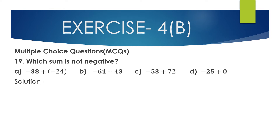Question 19, MCQ: Which sum is not negative? Option A: minus 38 plus minus 24. Adding two integers with the same (negative) sign: 38 plus 24 equals 62, and placing the negative sign gives minus 62, which is negative.